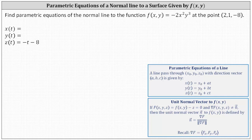Recall the parametric equations of a line passing through the point (x₀, y₀, z₀) having a direction vector with components a, b, c are given by the standard equation shown here.